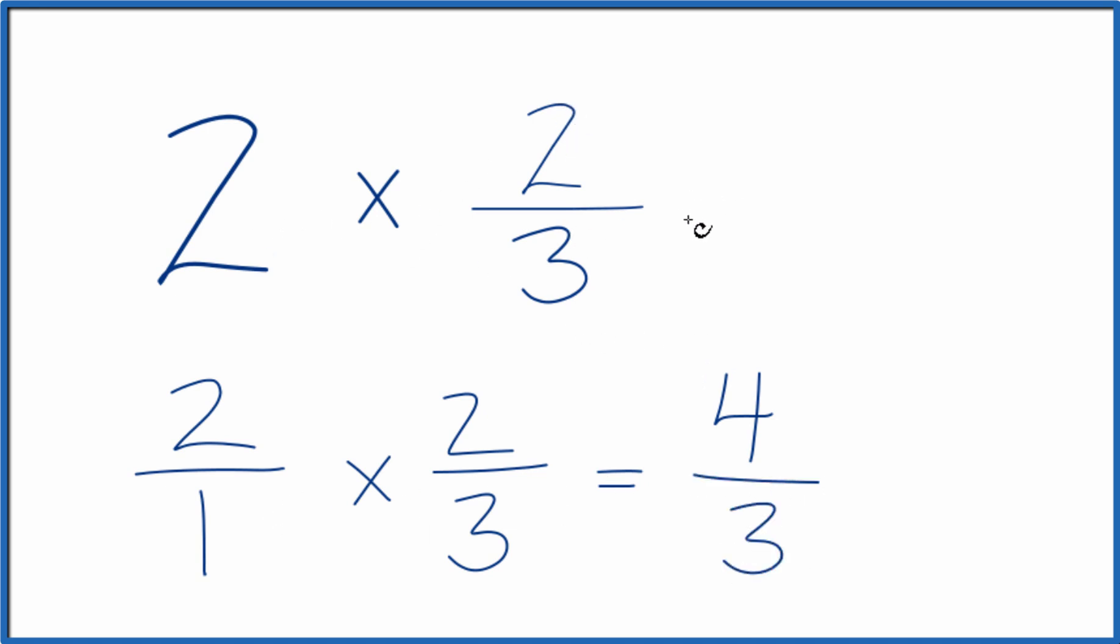So two times two-thirds, that equals four-thirds, like we found before. And you could write this as a mixed number, one and one-third as well. This is Dr. B, multiplying two times two-thirds. Thanks for watching.